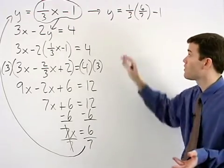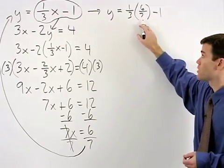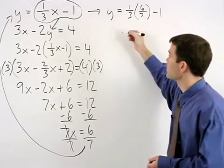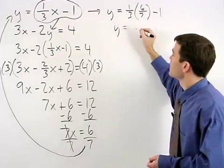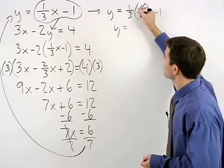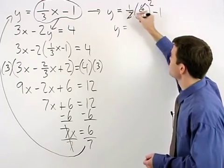Notice that to solve for y, we're going to need to deal with some fractions. Simplifying the right side of this equation, we have 1 third times 6 sevenths. So we can cross cancel the 6 and the 3 to 2 and 1.